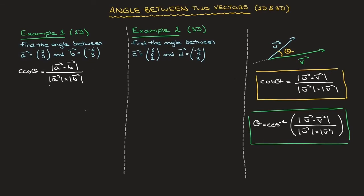We need to calculate the dot product of a and b, as well as the magnitude of a and the magnitude of b. Starting with the dot product: a dot b equals 2 times negative 4, which is negative 8, plus 5 times 3, which is 15. So negative 8 plus 15 equals 7. That's a dot b.